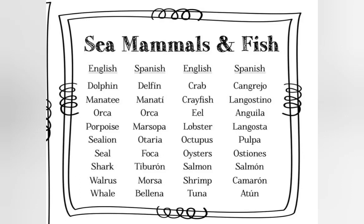Sea lion: otaria. Seal: foca. Shark: tiburón. Walrus: morsa. Whale: ballena. Crab: cangrejo. Crayfish: langostino. Eel: anguila. Lobster: langosta. Octopus: pulpo. Oysters: ostiones. Salmon: salmón. Shrimp: camarón. Tuna: atún.